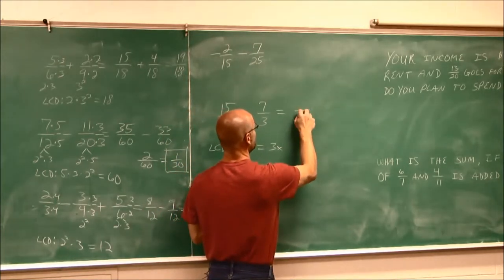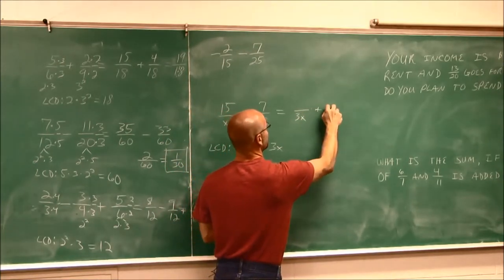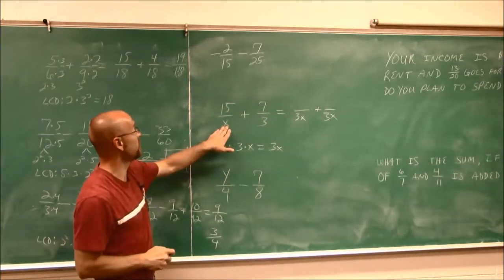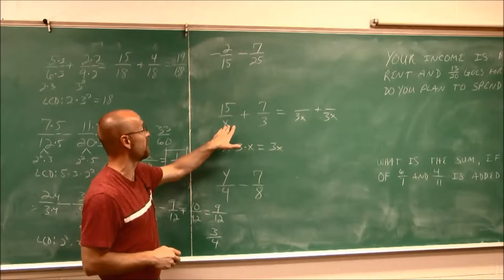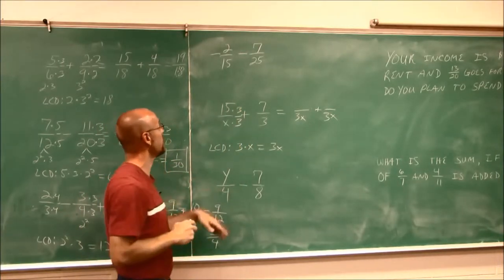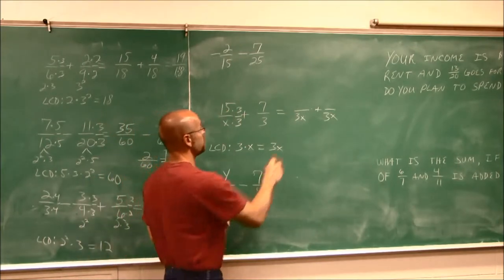So what I need to do is have denominators that have 3x. So what do I have to do to x? To make it 3x, I have to multiply it by 3. 3 over 3, what I do to the bottom, I do to the top.